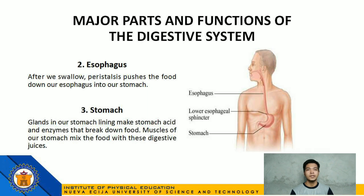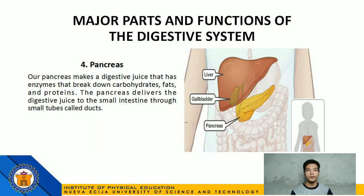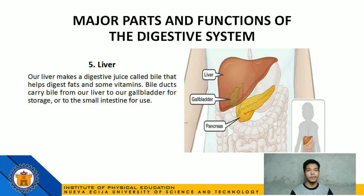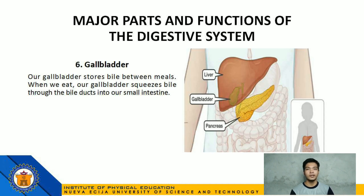Number 3: Stomach — glands in our stomach lining make stomach acid and enzymes that break down food; muscles of our stomach mix the food with these digestive juices. Number 4: Pancreas — our pancreas makes a digestive juice that has enzymes that break down carbohydrates, fats, and proteins; the pancreas delivers the digestive juice to the small intestine through small tubes called ducts. Number 5: Liver — our liver makes a digestive juice called bile that helps digest fats and some vitamins; bile ducts carry bile from our liver to our gallbladder for storage or to the small intestines for use. Number 6: Gallbladder — our gallbladder stores bile between meals; when we eat, our gallbladder squeezes bile through the bile ducts into our small intestine.